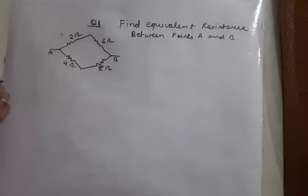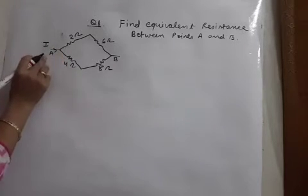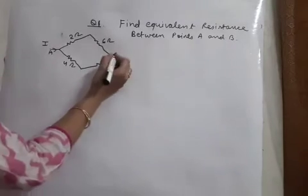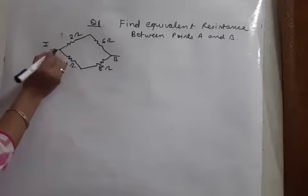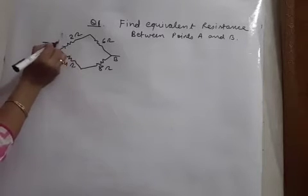We have to enter current. We will enter current always from the first point A according to the question, and at point B we have to exit the current. As the current will enter here, because there are two parts, the current is getting divided.